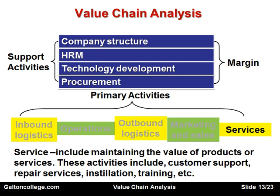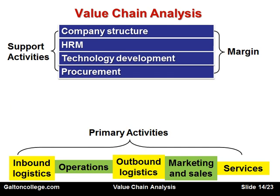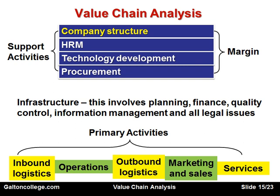We have two types: support activities and primary activities, and each one adds to the value chain. The infrastructure involves planning, finance, quality control, information management, and all the legal issues. It is the administration and management of the business — its planning, direction, quality of product, information management, and legal aspects.